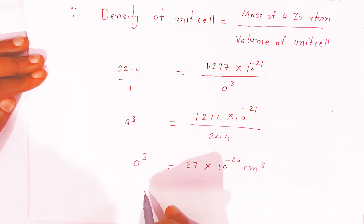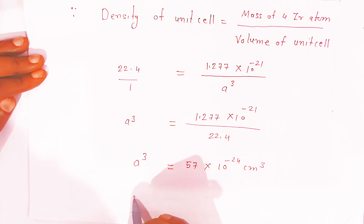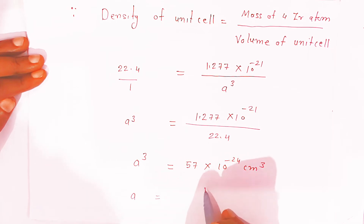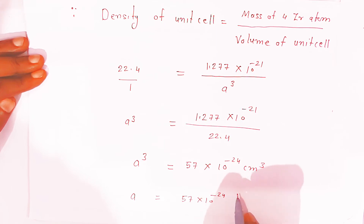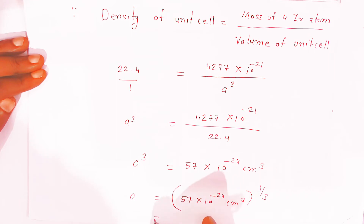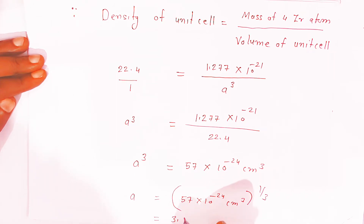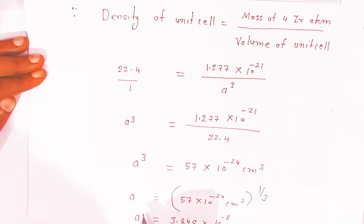Now we want 'a', so we take the cube root. a = ∛(57 × 10⁻²⁴ cm³) = 3.848 × 10⁻⁸ cm. The cube root of 10⁻²⁴ is 10⁻⁸, and the cube root of cm³ is cm. Now you have the side of the unit cell.